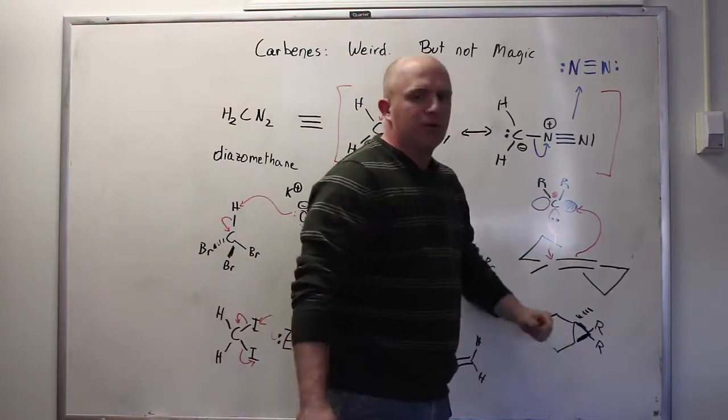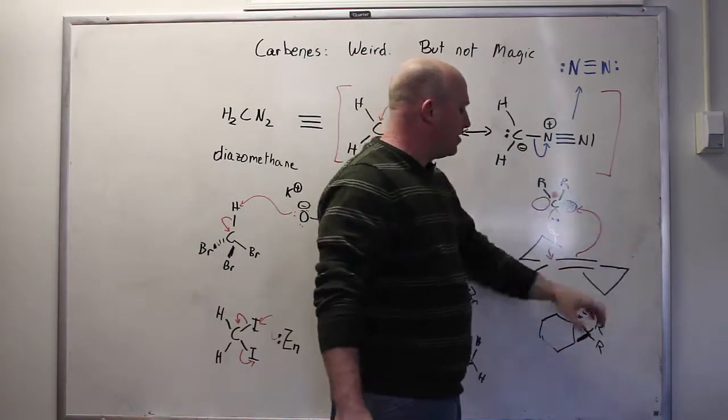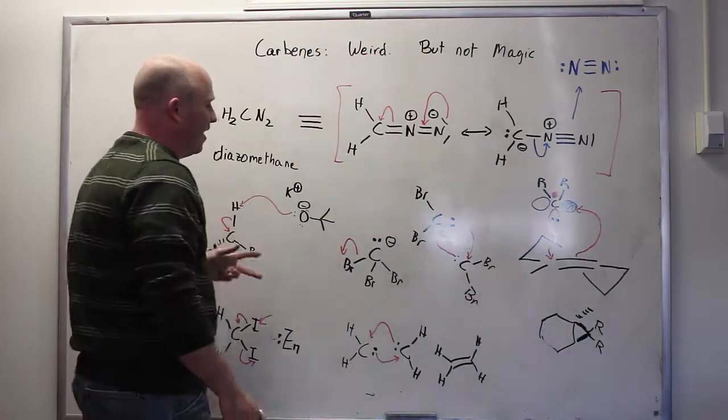Carbenes react with double bonds to form cyclopropanes, and the R groups are just along for the ride. So if there are two hydrogens, then you end up with two hydrogens there. If you have bromides, naturally you end up with bromides there.